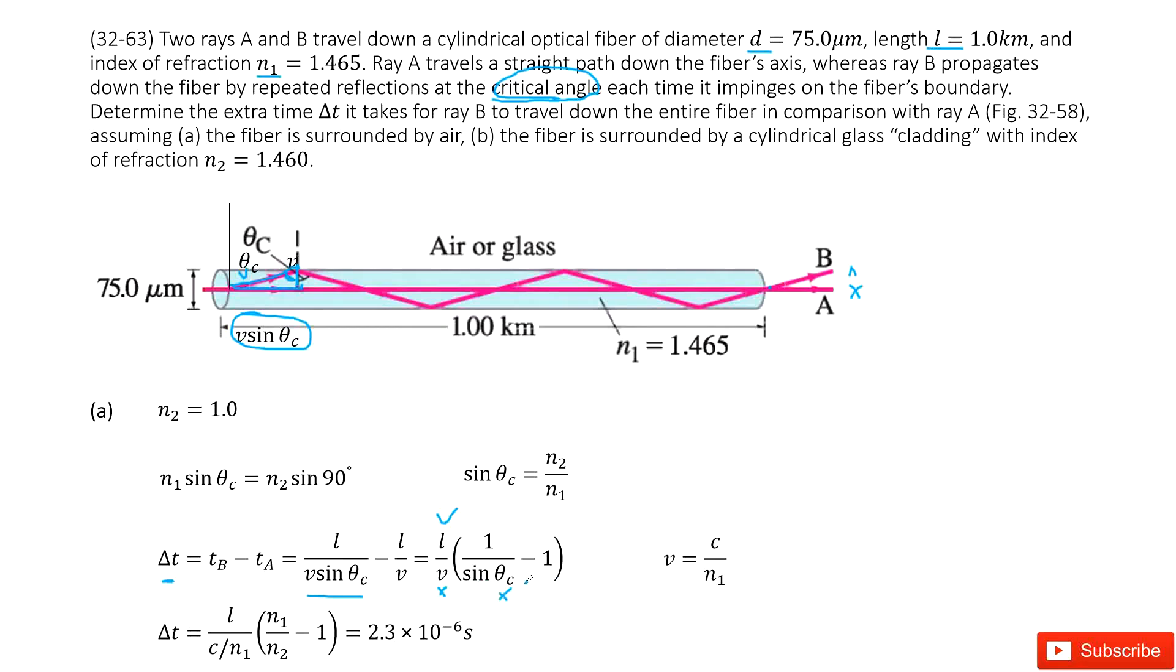For the critical angle of ray B, we can write down Snell's equation. At the critical angle, N1 sine theta_c equals N2 sine 90 degrees.